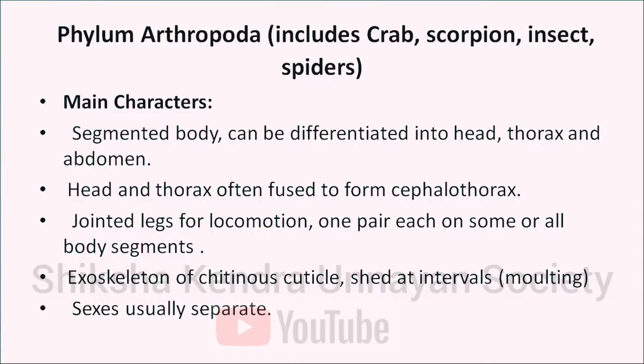The next phylum is phylum Arthropoda, which includes crabs, scorpions, insects, and spiders. These animals have a segmented body differentiated into head, thorax and abdomen. Head and thorax are often fused to form a cephalothorax. They have jointed legs for locomotion — one pair each on some or all body segments. Their exoskeleton is made up of chitinous cuticle shed at intervals — this process is called molting. Sexes are usually separate. Arthropods are further divided into four classes: Crustacea, Myriapoda, Insecta and Arachnida.